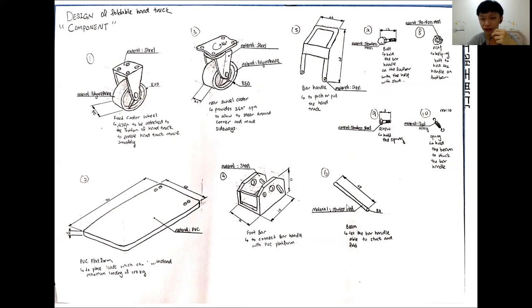And this is the stainless steel, the beam. And this is a screw, which is holding the spring. And the spring is used to hold the beam to support the bar handle. So you create a folding mechanism.